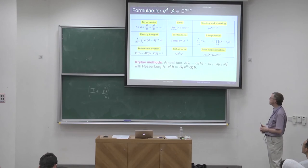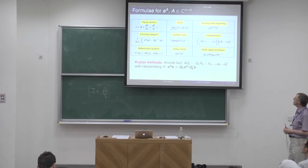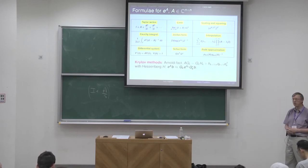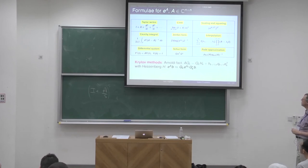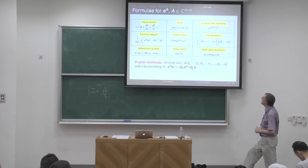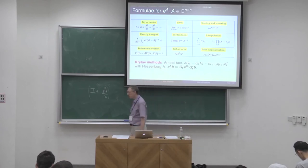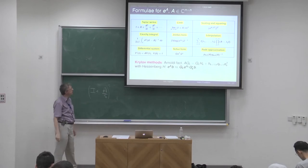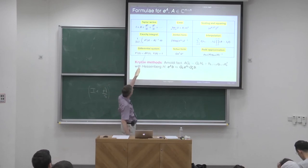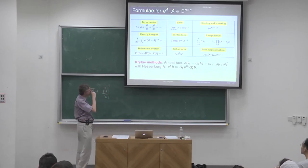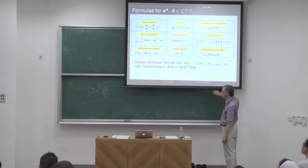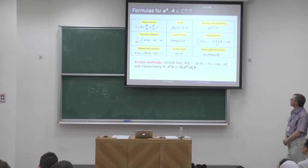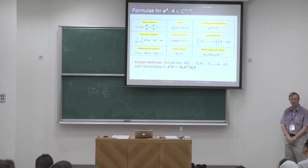Scaling and squaring is a successful method. The idea is to divide A by a power of 2 to make the norm close to 1, apply one of the other approaches, and then square back S times to recover e^A. There are other approaches including the Cauchy integral formula, where Trefethen and Weideman did plenty of work choosing suitable contours, particularly for symmetric positive semi-definite A. We've seen the Jordan form already. The interpolating polynomial via divided differences is also possible, though it can be expensive — order N^4 in principle.